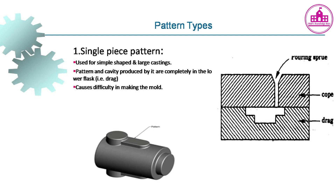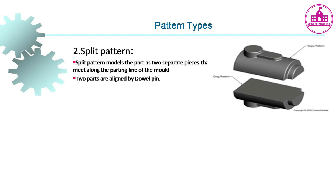Pattern Type 1 - Single piece pattern: Used for simple shape and large castings. The pattern and the cavity produced by it are completely in the lower flask. This can cause difficulty in making the mold.